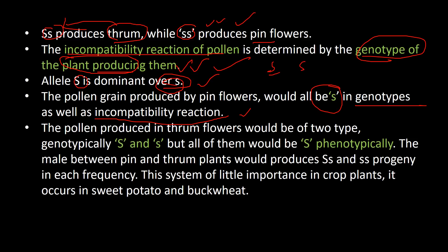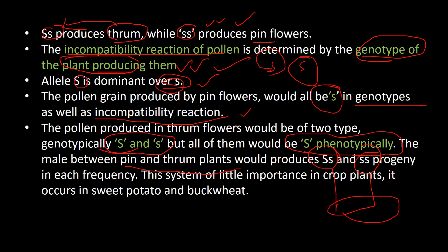The pollen produced in thrum flowers would be of two types. The cross between pin and thrum plants produces two progenies: one heteromorphic (Ss) and one homomorphic (ss). This heteromorphic system is of little importance in crop plants and occurs in sweet potatoes, buckwheat, etc.